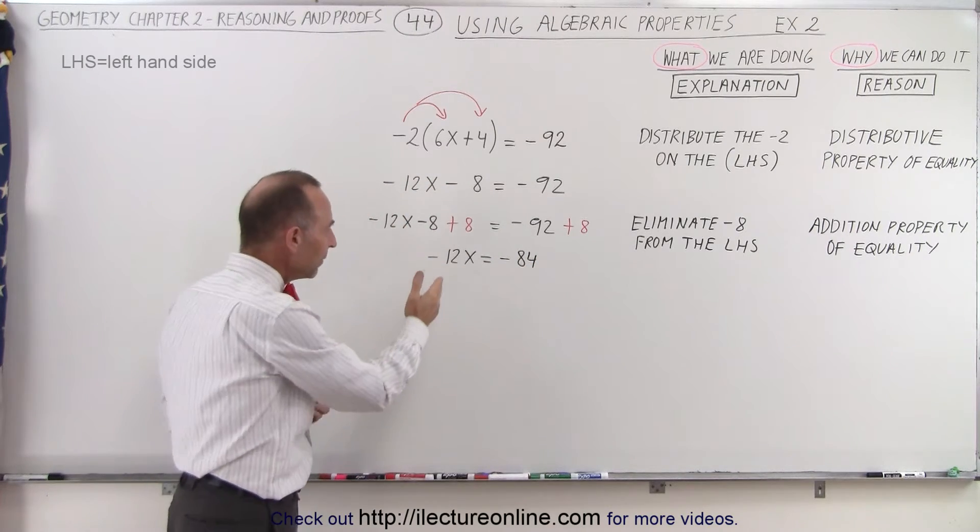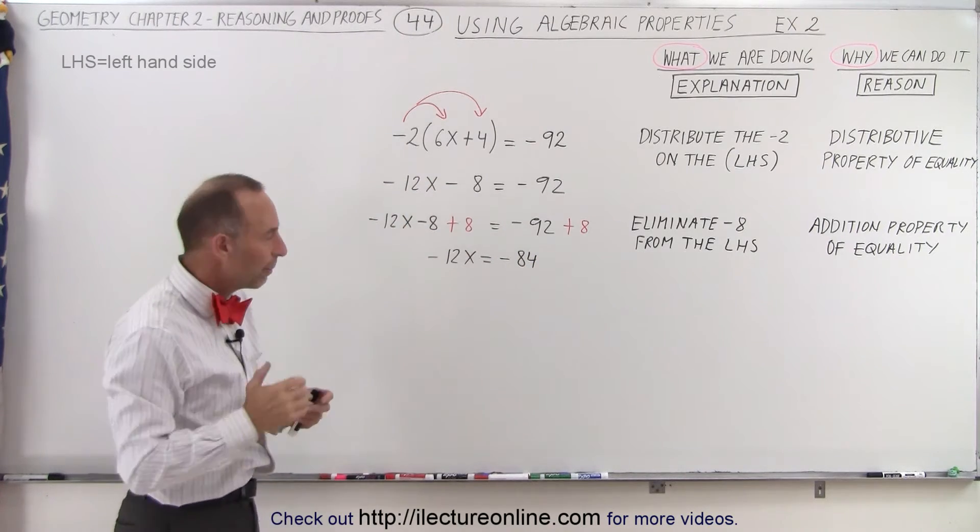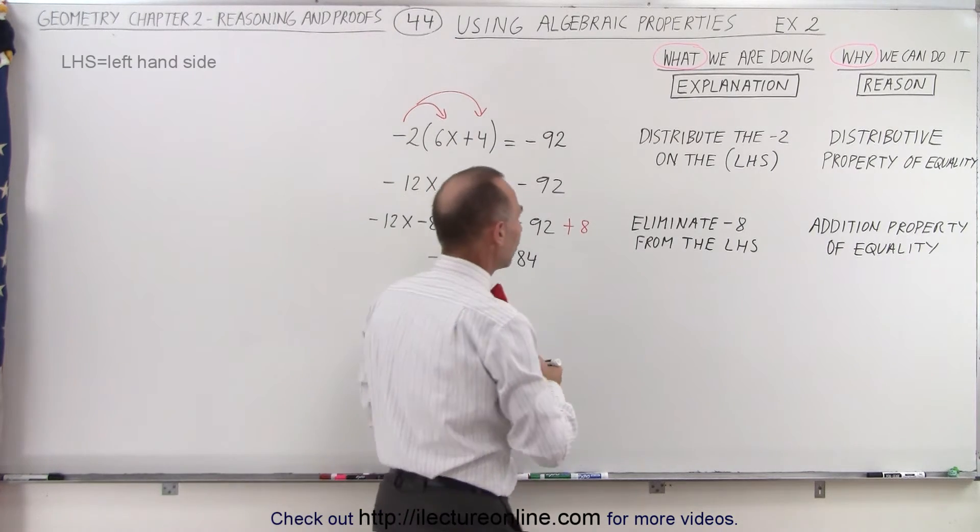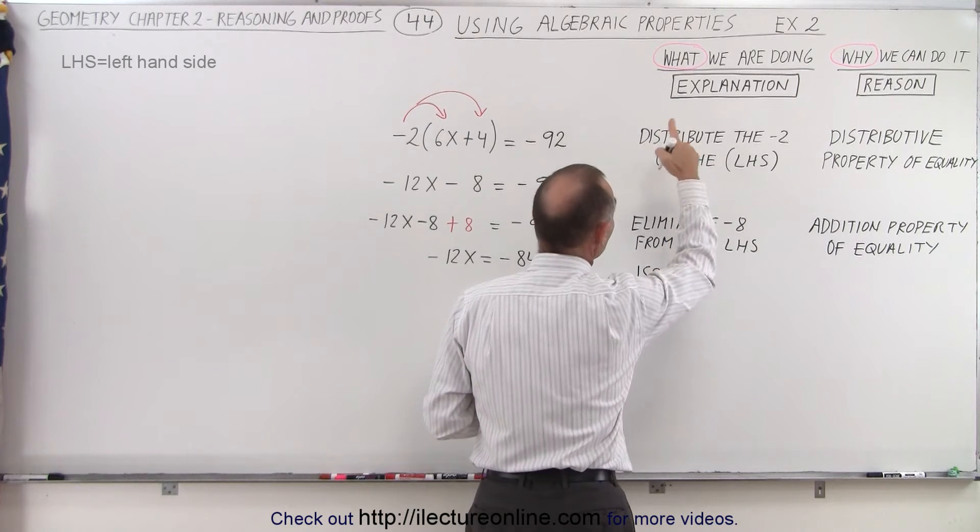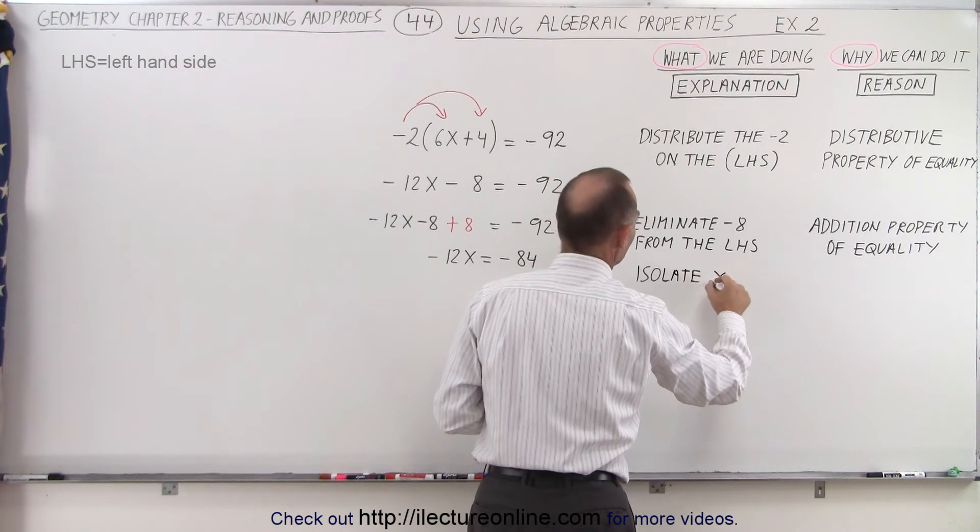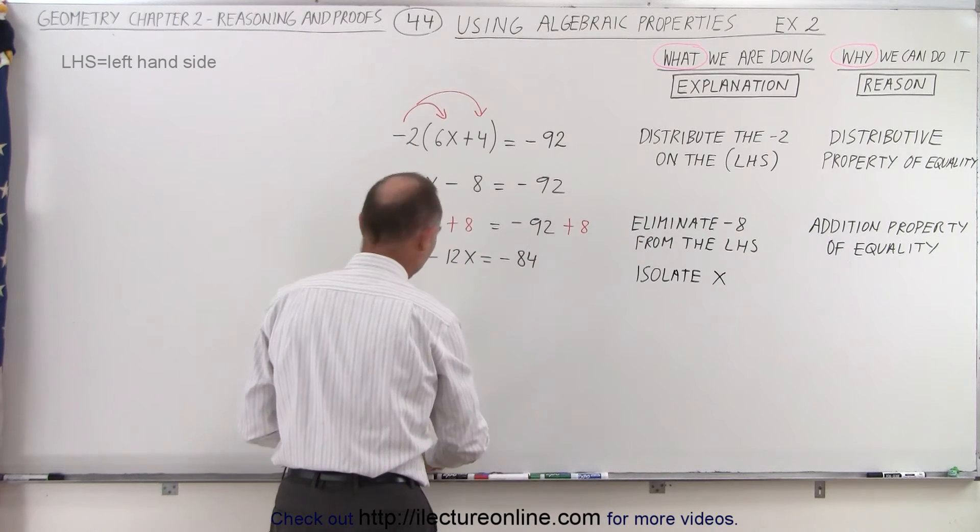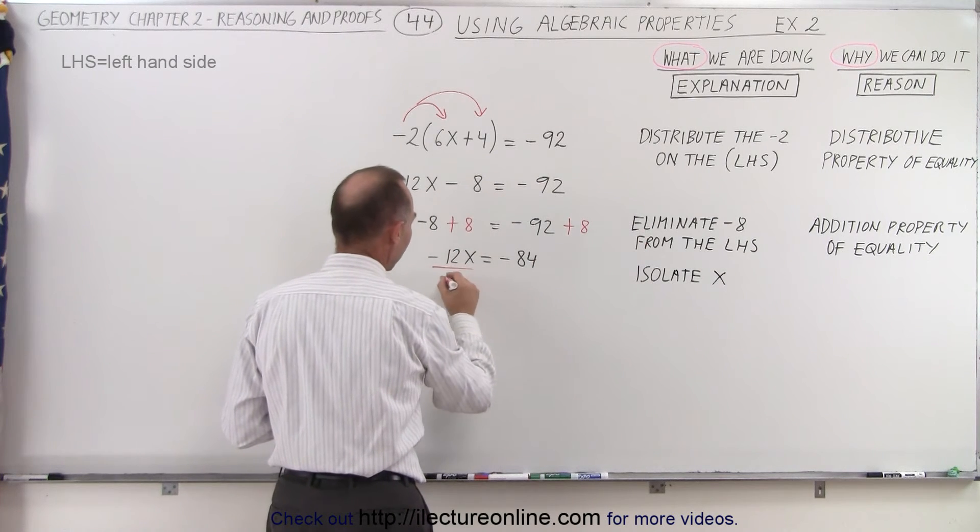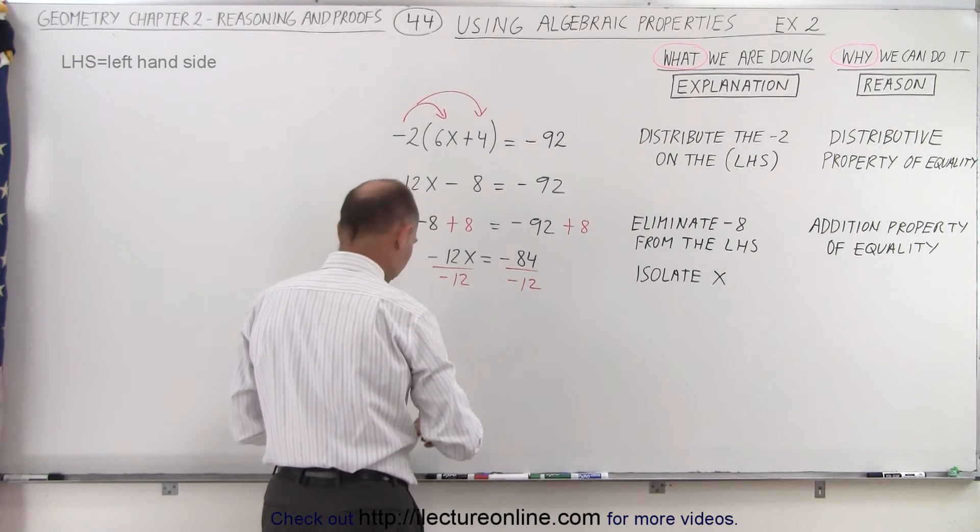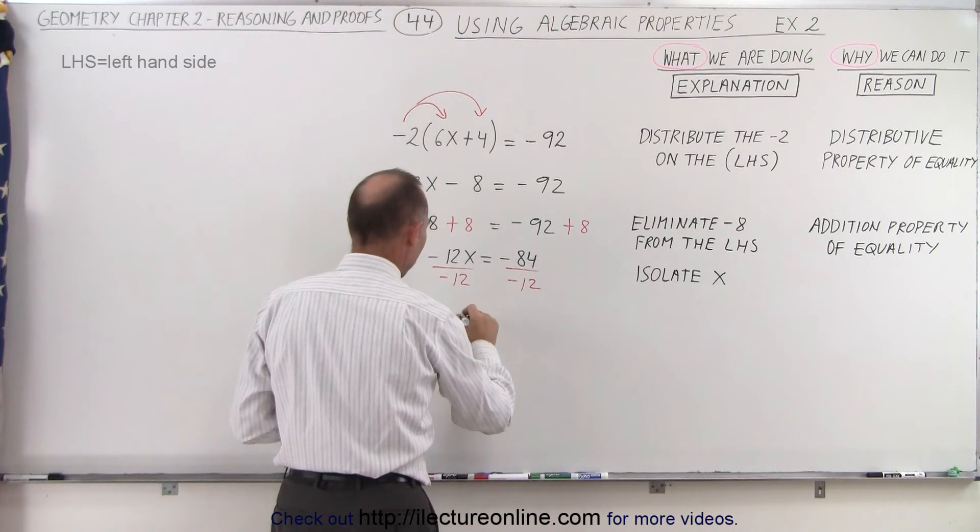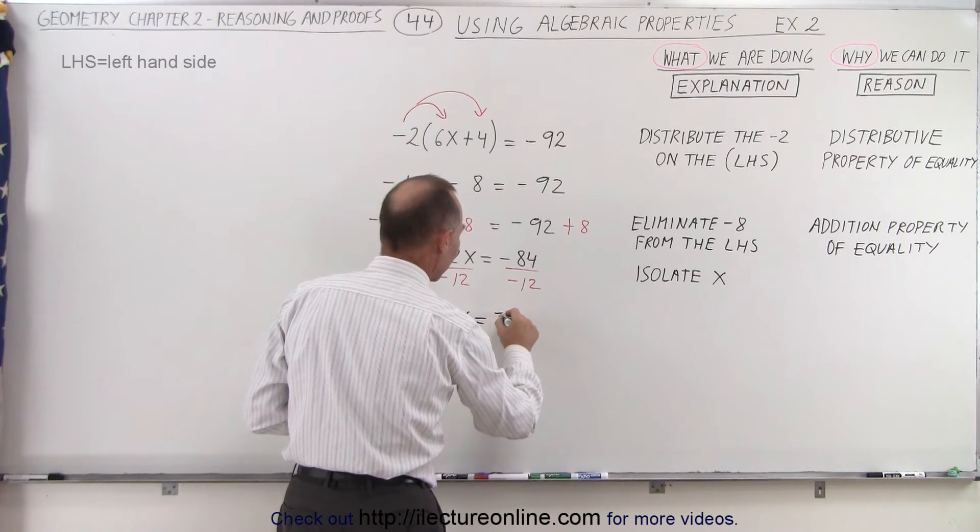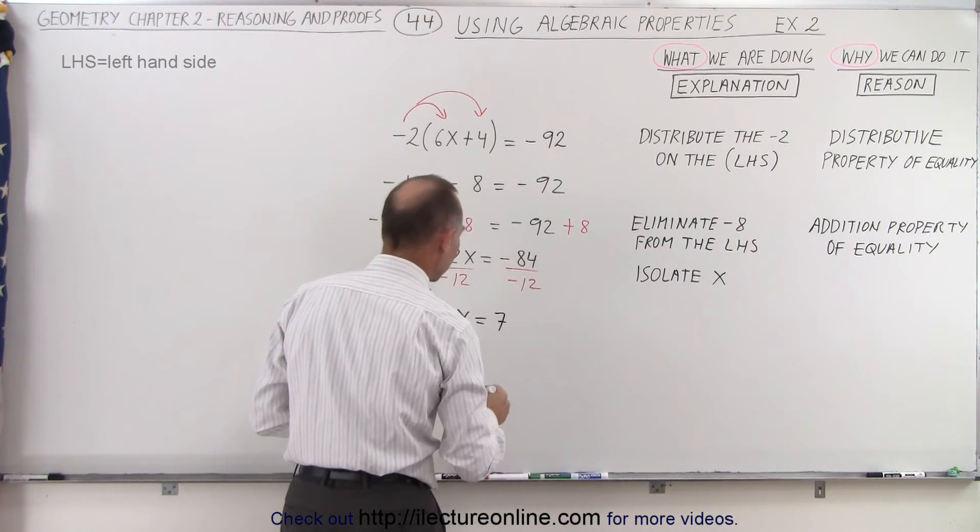Now I want to eliminate the minus 12 from the minus 12x. I want to isolate x. I'm going to isolate x, and it's going to be done as follows. I'm going to divide the left side by minus 12, and I'm going to divide the right side by minus 12. On the left side, I end up with x, and on the right side, I end up with 7, because 7 times 12 is 84.